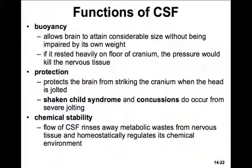Cerebrospinal fluid has a number of different functions. First, it allows buoyancy, allowing the brain to attain considerable size without being impaired by its own weight, so it allows it to float around in the cranium. If the brain rested heavily on the floor of the cranium, the pressure would kill all the nervous tissue and prevent signals from making their way around the brain. CSF also functions in protection — it forms a buffer around the brain so it doesn't strike the side of the cranium when the head is jolted. However, with a severe enough jolt, the brain can still hit the cranium, which is used as evidence in shaken child syndrome and is certainly the cause of concussion. The third function is chemical stability: the flow of cerebrospinal fluid rinses away metabolic waste from the nervous tissue and homeostatically regulates the chemical environment surrounding the brain.